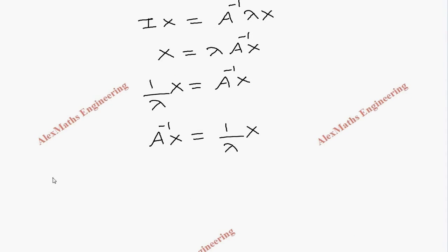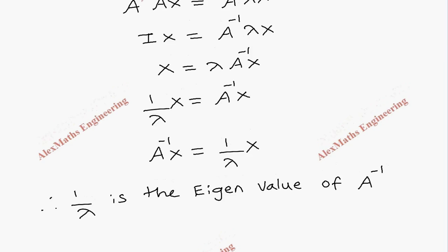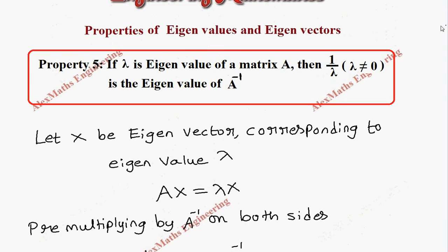Therefore, 1 by lambda is the eigenvalue of A inverse. Hence, we prove the property. That is, if lambda is the eigenvalue of the matrix A, then 1 by lambda, where lambda is not equal to 0, is the eigenvalue of A inverse.